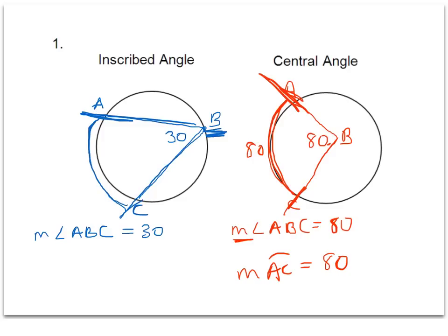And we have a theorem that states that if an angle is inscribed in a circle, then the measure of the angle equals half the measure of its intercepted arc. So what that means to us is we know arc AC, the measure of that is going to be double the inscribed angle, or you could think of it as the inscribed angle is half of the intercepted arc.